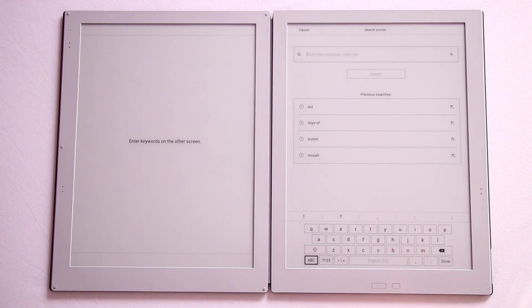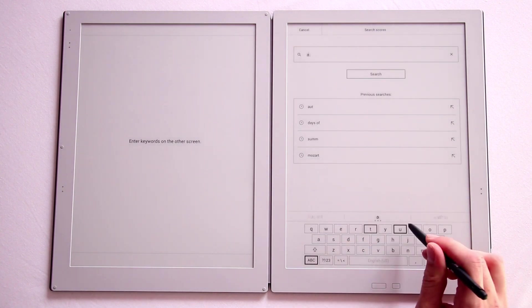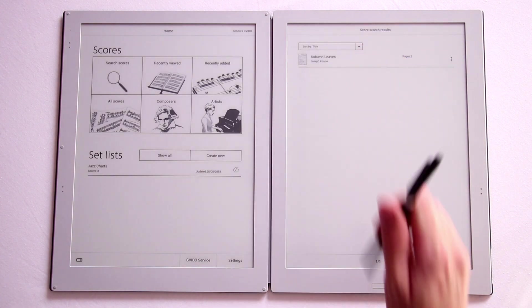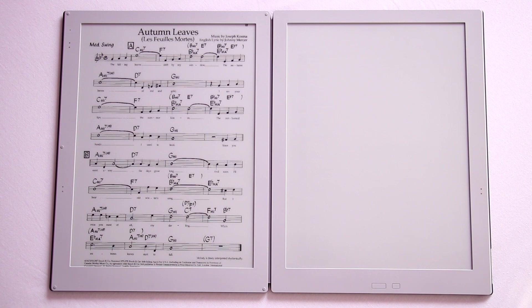Let's go for something we all know, Autumn Leaves. There we go. It looks pretty good. It's the same ink technology Kindles use so there's no light emitted and it's very easy on the eyes.